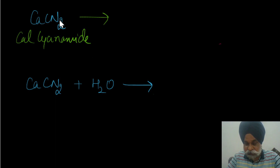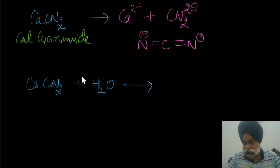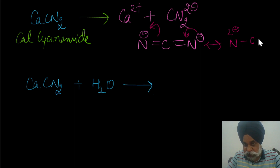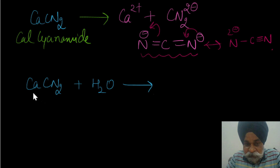Calcium cyanamide, when broken down, gives the cyanamide ion CN₂²⁻. The bonding structure shows a resonating structure, but the more stable form has the negative charge dispersed across two separate nitrogen atoms, rather than placing two negative charges on carbon. The stable structure has a triple bond: N≡C–N²⁻.